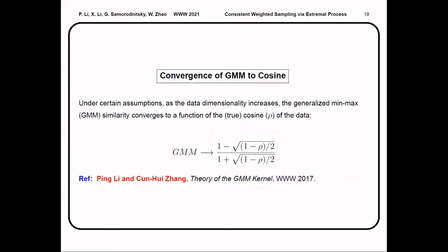Besides the extensive experimental results, we also have some nice theoretical results of GMM kernel. Under certain data assumptions, as the data dimensionality increases, the GMM similarity converges to a function of the cosine similarity of the data, which is given in this formula. This result was presented in the Web Conference 2017.